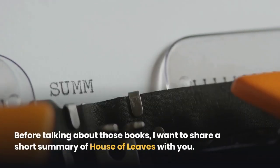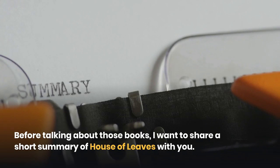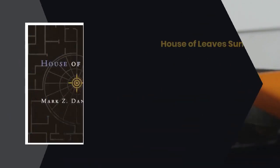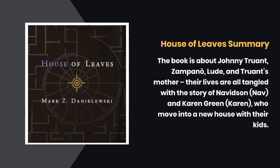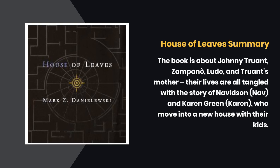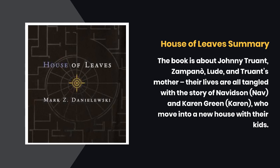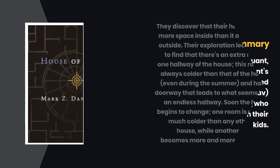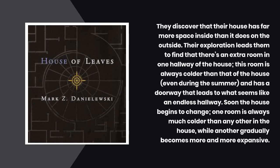Before talking about those books, I want to share a short summary of House of Leaves. The book is about Johnny Truant, Zampano, and Truant's mother. Their lives are all tangled with the story of Navidson and Karen Green, who move into a new house with their kids. They discover that their house has far more space inside than it does on the outside.